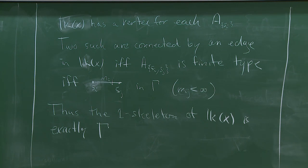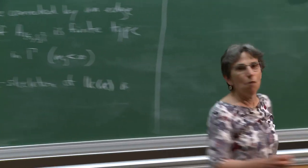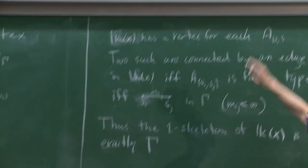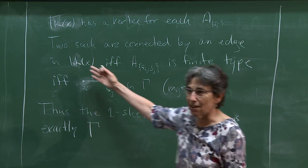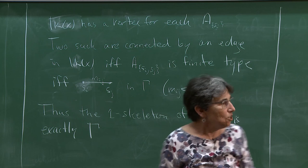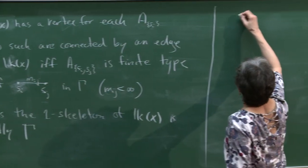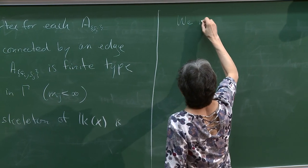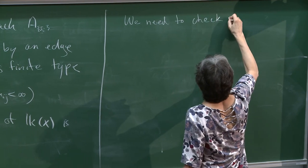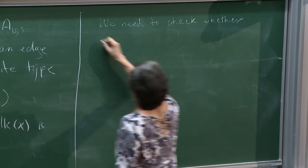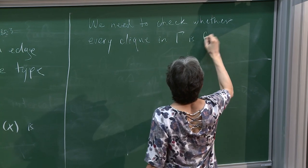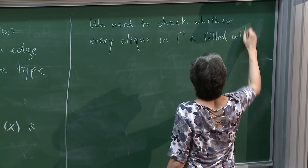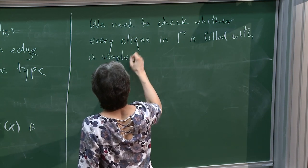So if I look at the link, I know what its one-skeleton is — it's exactly γ. What we need to check now is whether cliques in γ get filled in as simplices in the link. Whenever I see a clique in γ, that's a clique in the link, and I need to know whether it gets filled in.